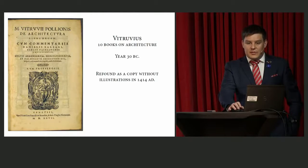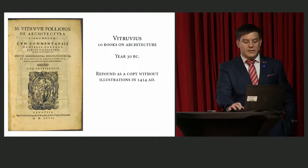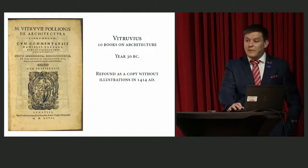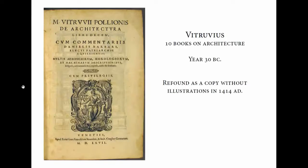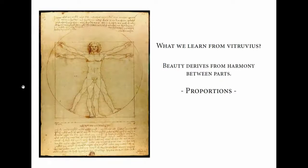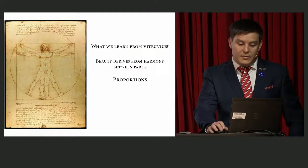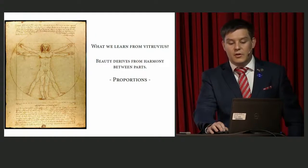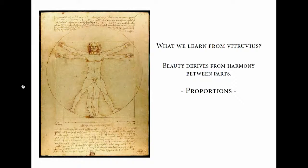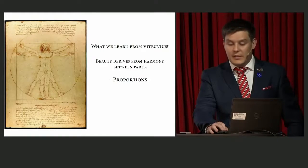The major source of architecture and the history of architecture is Vitruvius — the ten books of architecture, Decem Libri dell'Architettura. It was re-found as a copy, lacking illustrations, in 1414. This book is almost the only oldest and divine source of what we know about antiquity when it comes to architecture. From Vitruvius, first of all, beauty derives from the harmony between parts — that's proportion. Leonardo da Vinci did an interpretation, which we all know, and the Vitruvian man was born.